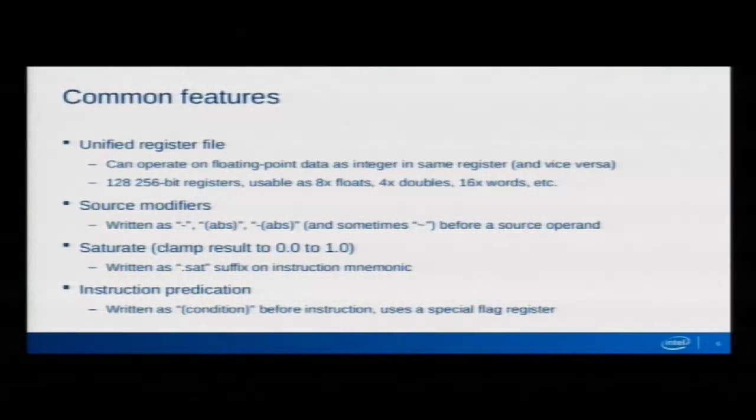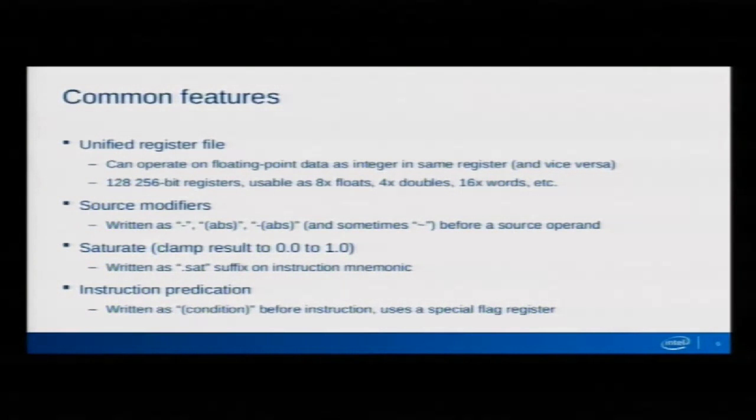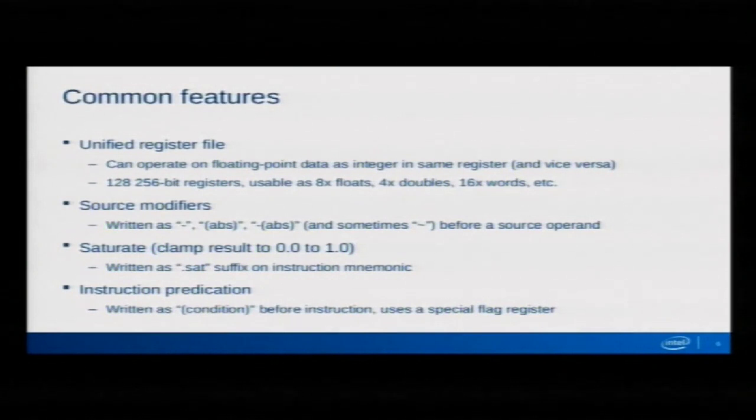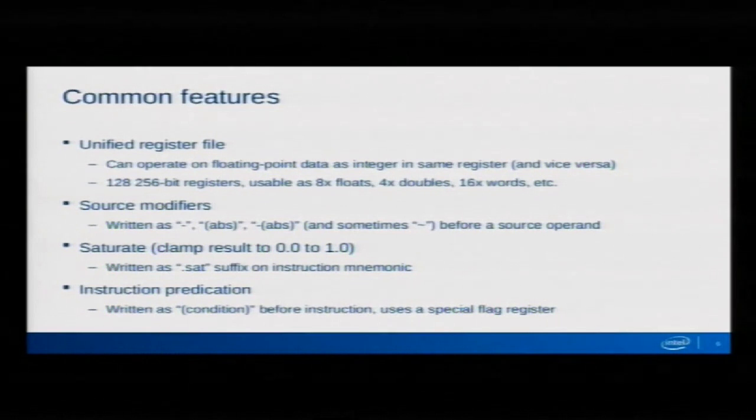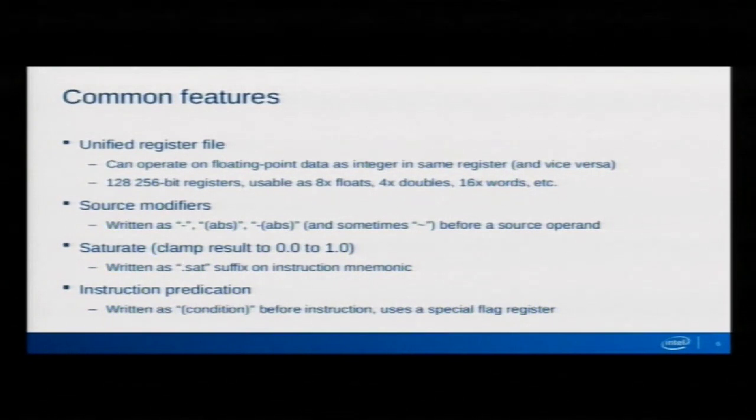965 has 128 vector registers, and they are 256-bit registers. They can be accessed with multiple types — one could hold eight floats or four doubles, or 16 16-bit words. The 'unified' keyword means that the same registers are capable of holding different data. So, for instance, you could perform an addition instruction on floats, and then in the next instruction just access that result as if it's an integer — whereas on x86, you would have to move to and from different register files.